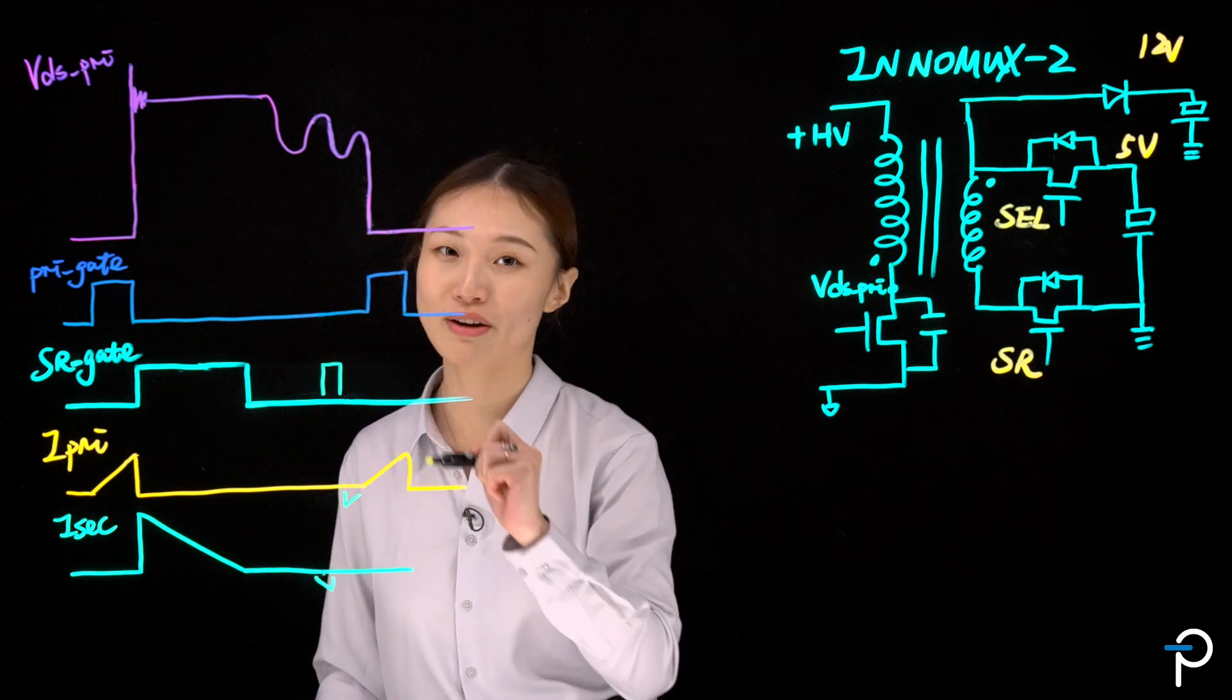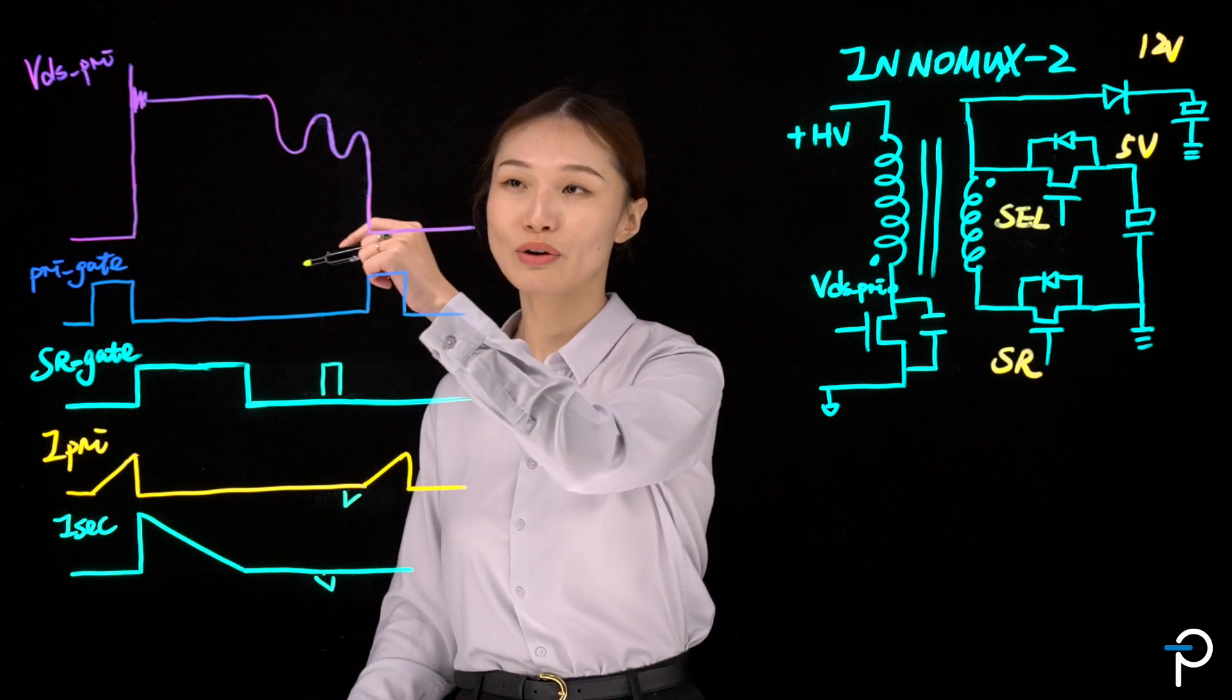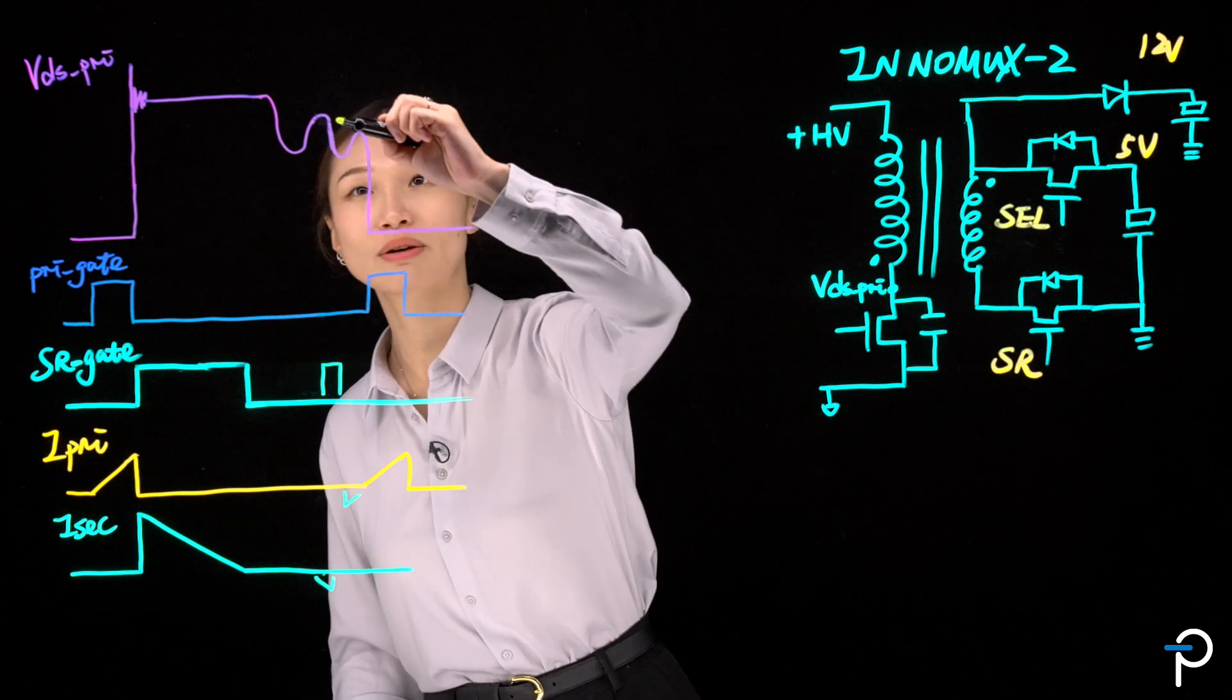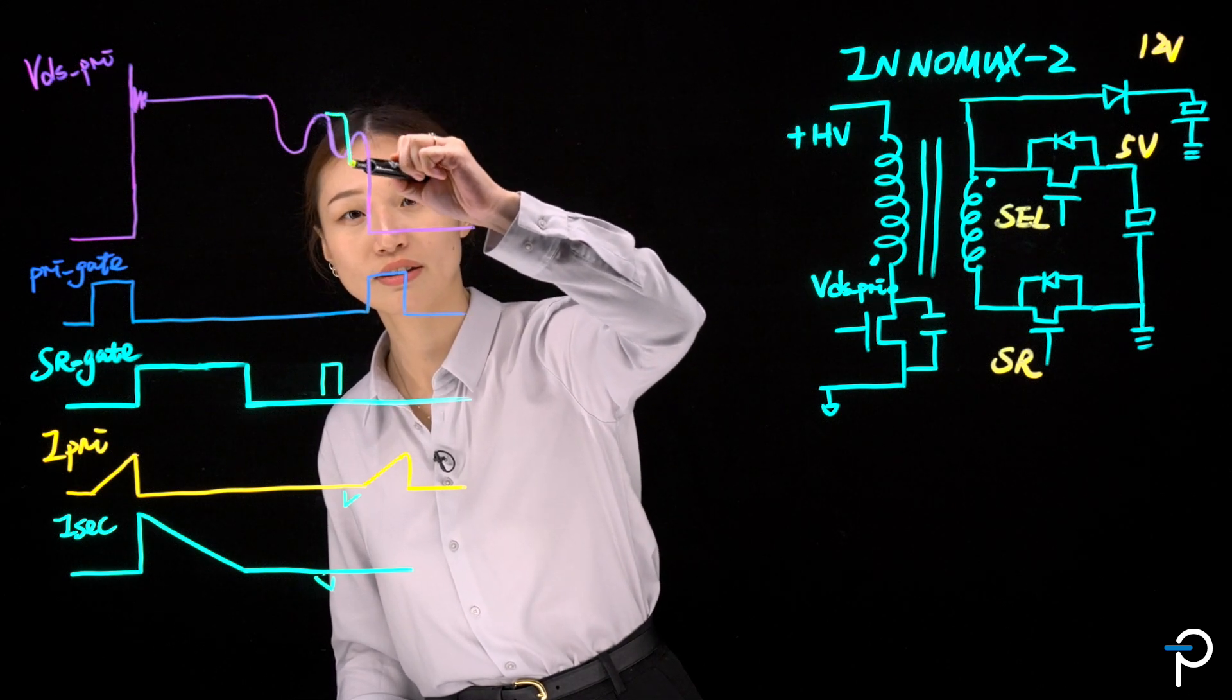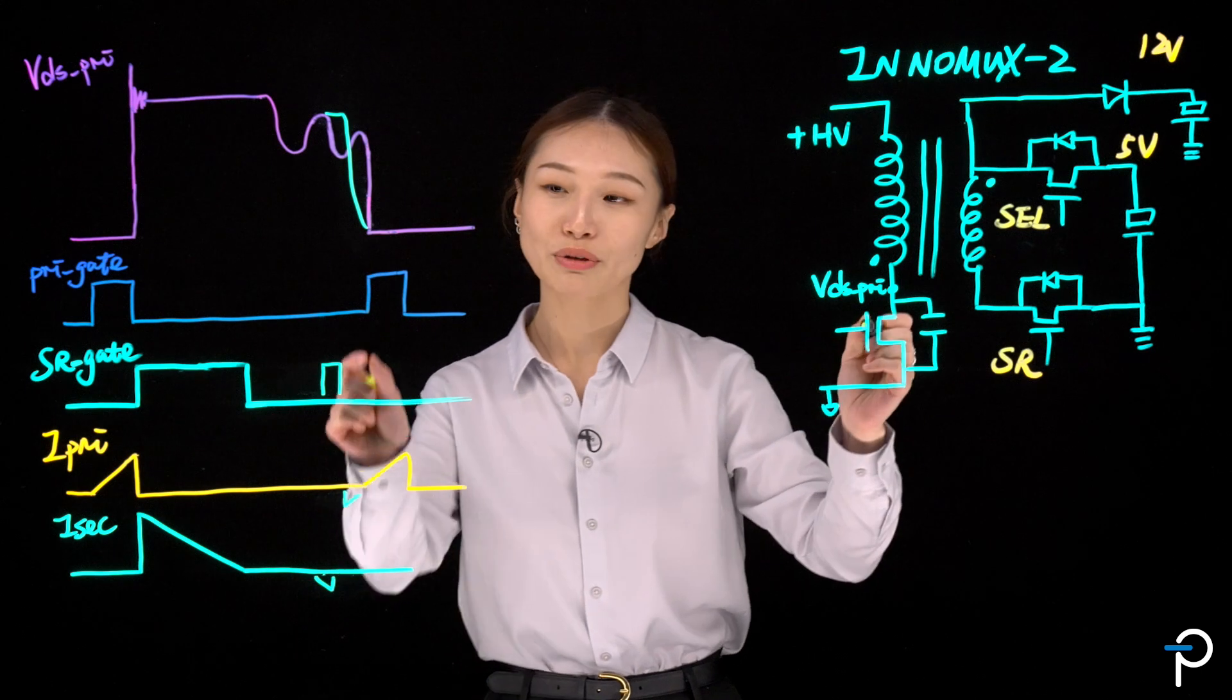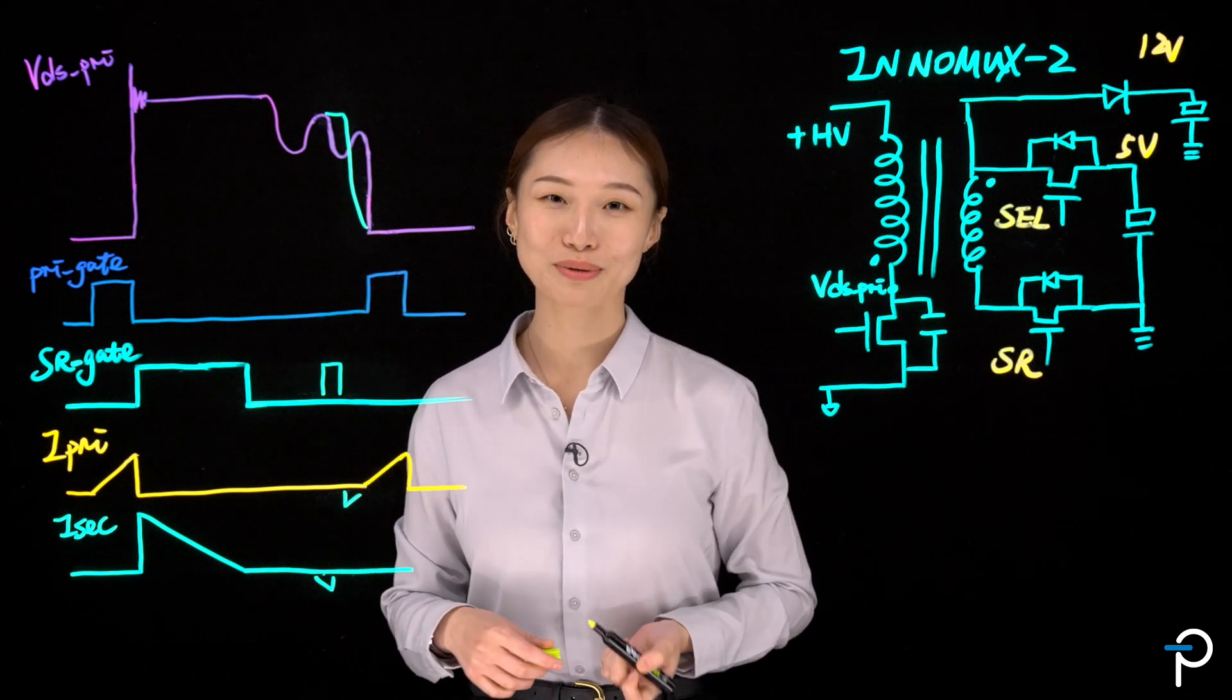This current will be very small. What's important is on the VDS primary node, the voltage will look something like this, and then start decaying until close to zero. If we turn on the switch at this point, that gives us zero voltage switching.